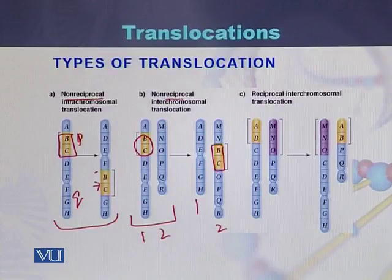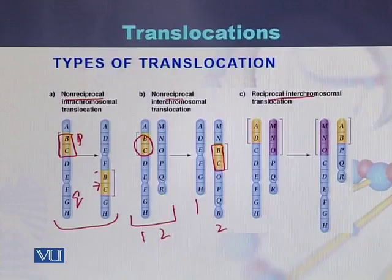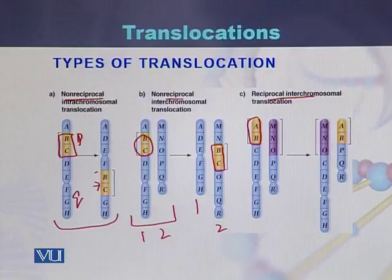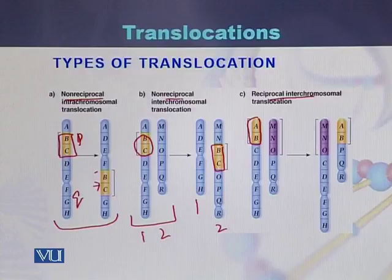The third type of translocation is reciprocal inter-chromosomal translocation. In this type, the fragment of one chromosome is deleted and joins onto another chromosome — deleted from chromosome 1 and joined to chromosome 2. These are the different types of translocation.